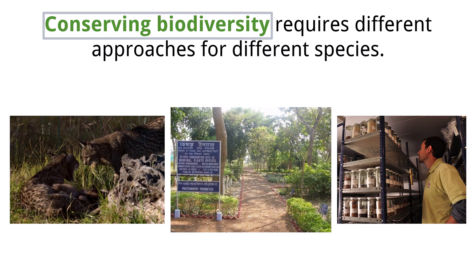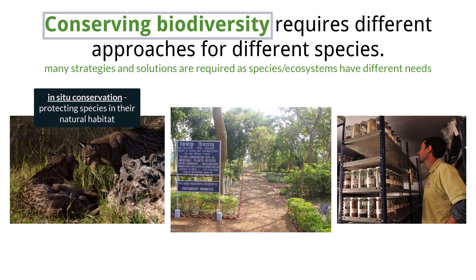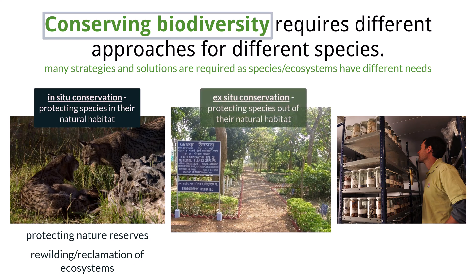Solving the biodiversity crisis requires a multi-pronged approach, because no single strategy is enough and different species and ecosystems need different kinds of help. One crucial method is in-situ conservation, which means protecting species right in their natural homes. This includes managing nature reserves found all over the world, where habitats are carefully protected and restored. Another powerful in-situ approach is rewilding and reclamation of degraded ecosystems, restoring damaged areas back to their natural state. However, for species facing immediate extinction threats or whose habitats are too damaged, ex-situ conservation — protecting species outside their natural environments in zoos and botanical gardens — becomes a better option.